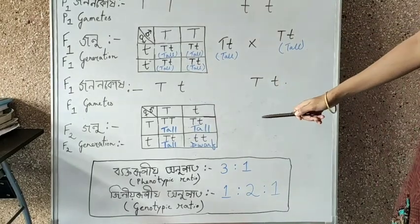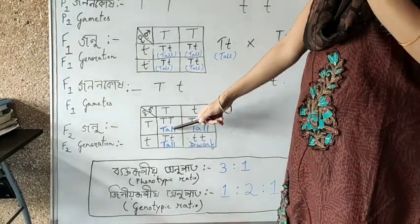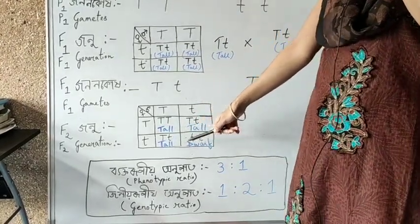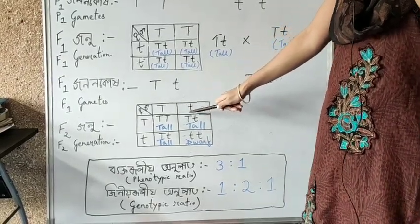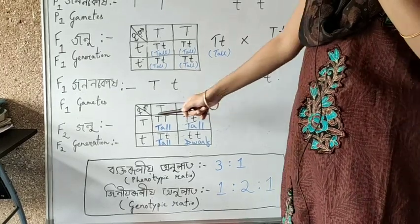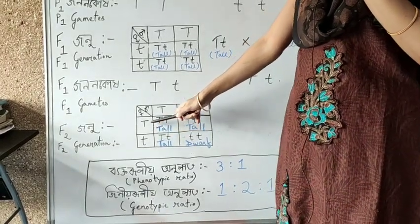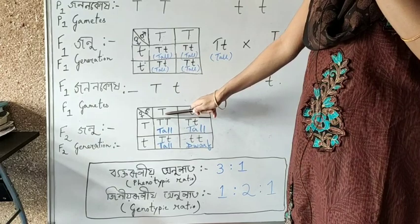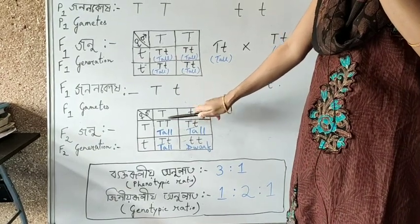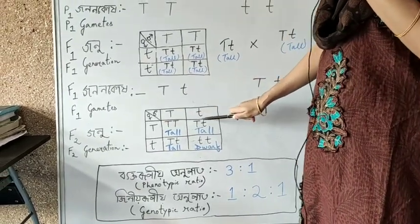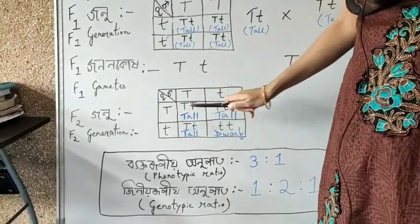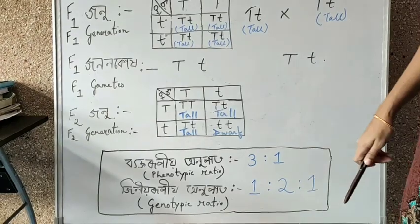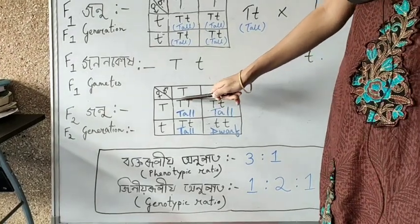For F2, the gametes are T and t. Using a Punnett square, we can determine the genotypes in F2 generation by crossing the gametes.